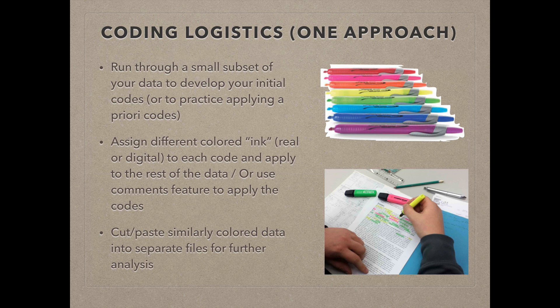I find it easiest for me to assign a different colored ink, either real if I'm doing this on paper, or digital if I'm using an electronic file, to each code. Then any time I come across a section of text that is referenced by pink code, I highlight that section of text pink. You could also use the approach Asha used, which I described in the previous slide, and use the comment feature in Word to identify the appropriate code.